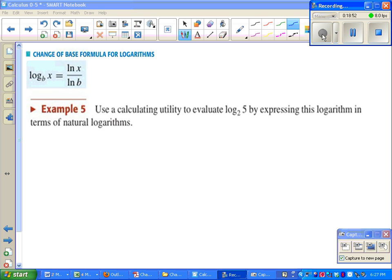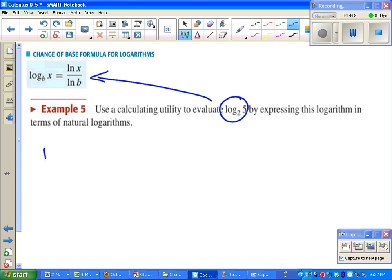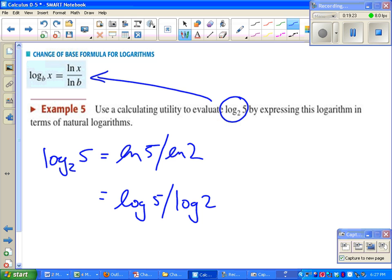Last up for this lesson is how to convert a log to any other base, which really only has one application: figuring out a decimal approximation on a calculator. We want to figure out what log base 2 of 5 is. The formula we use is, in our calculator, we can't type in log base 2 of 5. But we can type in ln(5) divided by ln(2). You can also type in your calculator log(5) divided by log(2). Those are the only two log buttons you have on your calculator. You don't have a log base 2 button. So you have to choose one of those. And then you'll be able to get your decimal approximation. Go ahead and try that on your own.